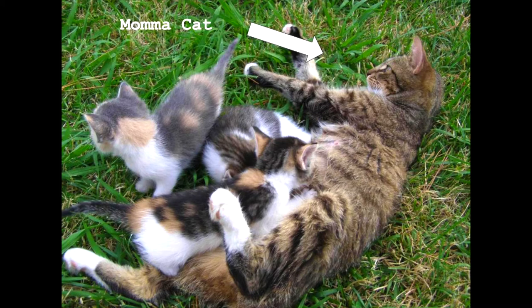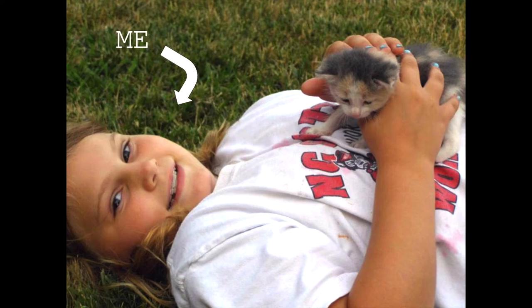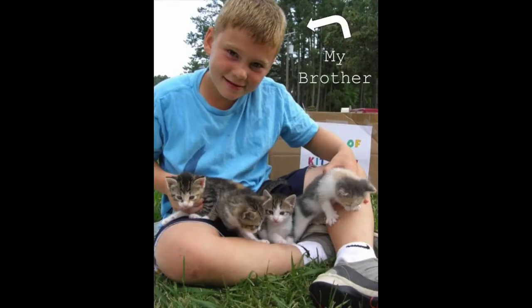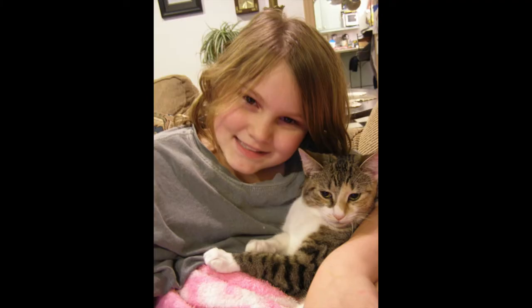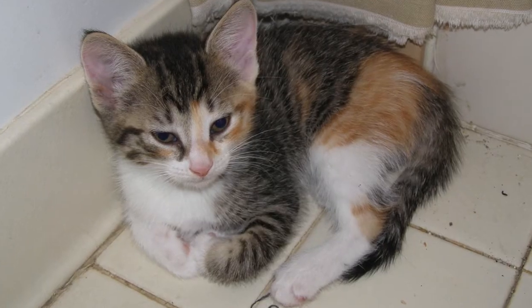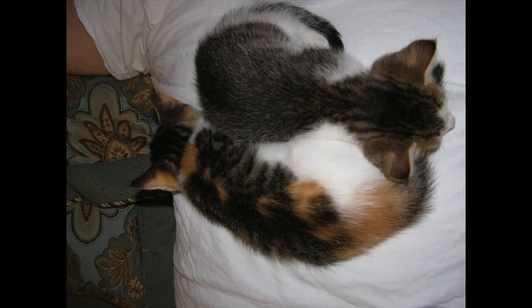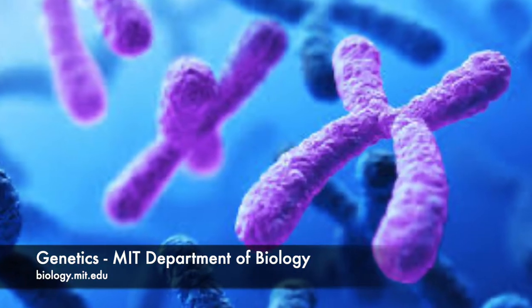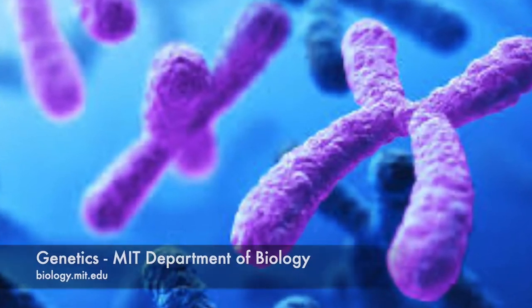our mom let us keep one kitten each. I chose a girl kitten who I named Mittens. My brother chose a boy kitten named Rhino. I always wondered why Mittens has an orange, black, and white coat while her brother only has a black and white coat. It turns out that genetics can be used to explain these differences in coat color.